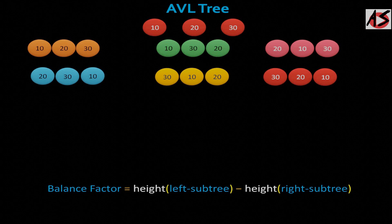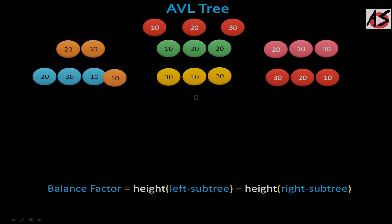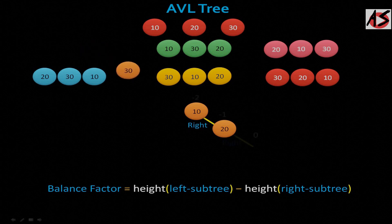If you take first one, you take 10 as a root, then you take 20 in right of 10, and at last 30 at right of node 20. So it's a right right case.